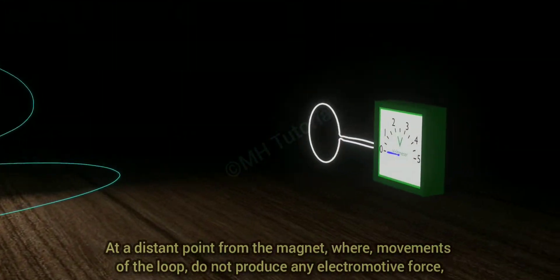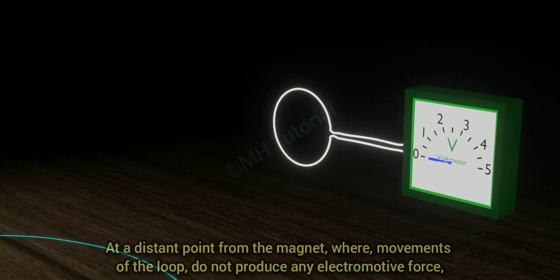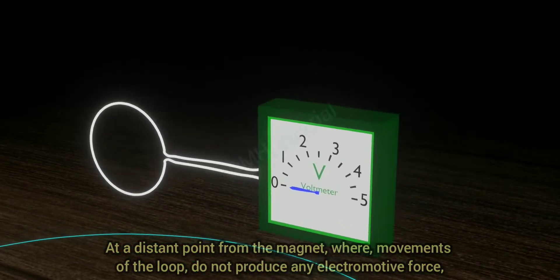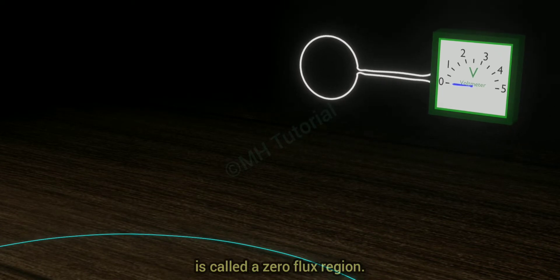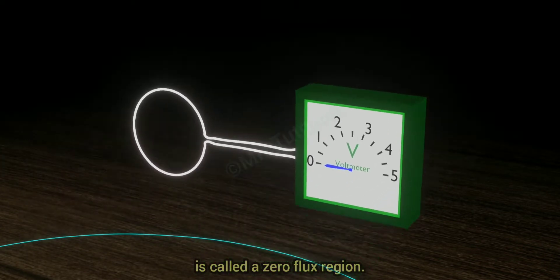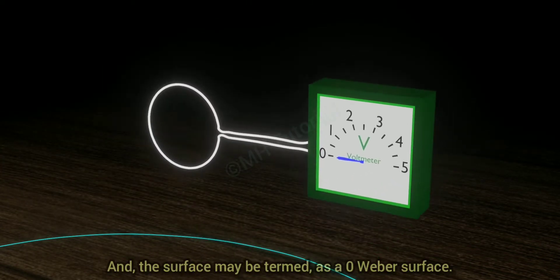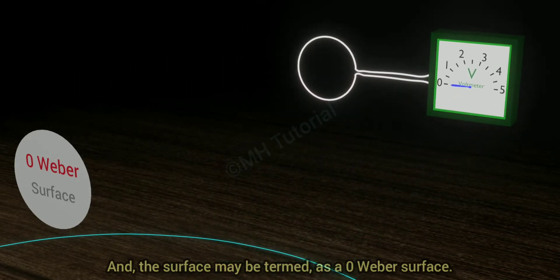At a distant point from the magnet where movements of the loop do not produce any electromotive force is called a zero flux region. And the surface may be termed as a zero Weber surface.